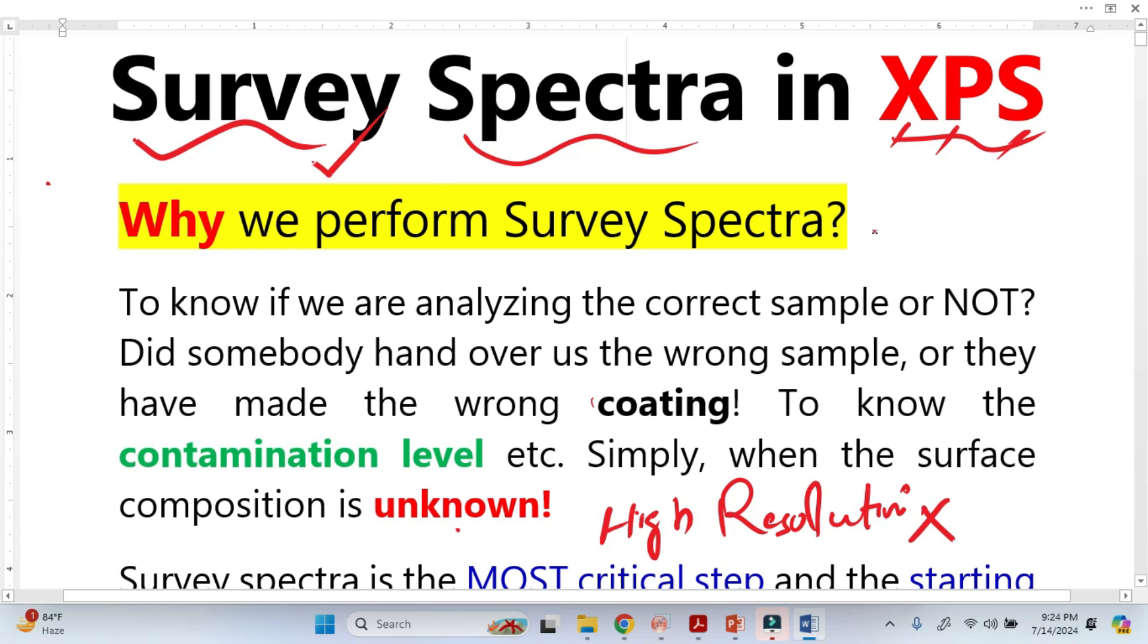Survey spectra is particularly important when we do not know the elements in the sample. For example, the element may be lead, may be cobalt, maybe oxygen, maybe zinc, but we do not know the elements, so we have to run the survey spectra. We do not know whether the sample is correct or not, if somebody handed over to us the sample, and we do not know about the coating process.